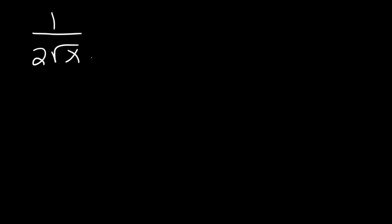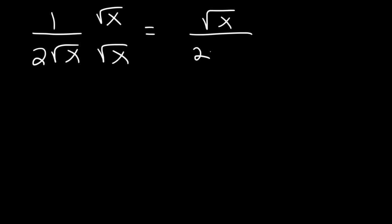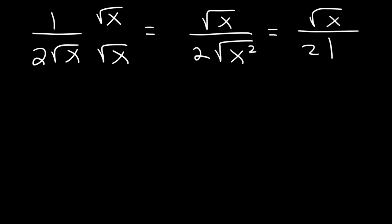Now what about 1 over 2 root x? All you need to do is multiply the top and the bottom by root x. You don't have to worry about the 2 because it's outside of a radical. So this is root x divided by 2 times the square root of x squared. The square root of x squared is x, but we need to use the absolute value symbol.